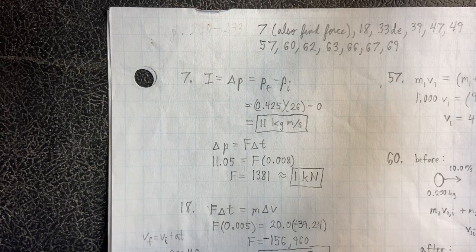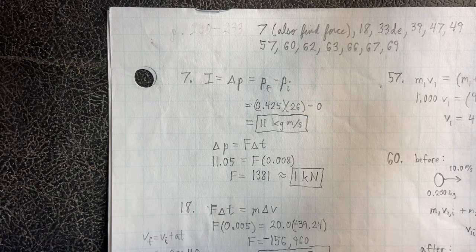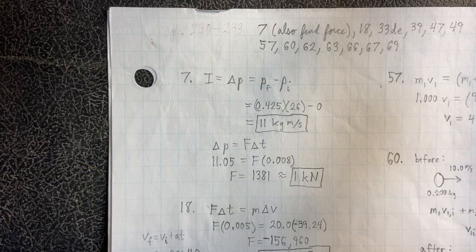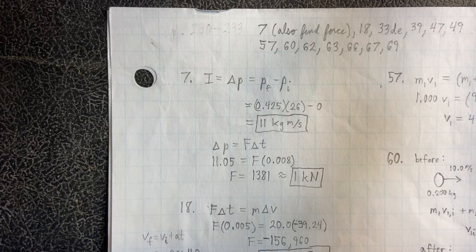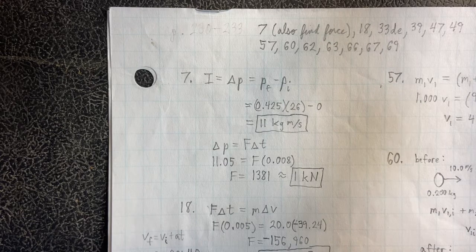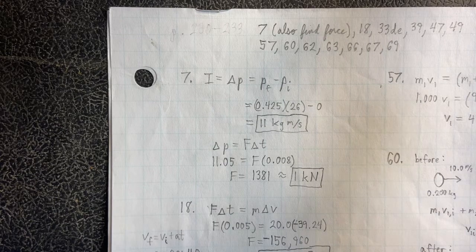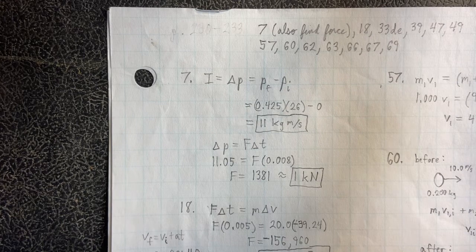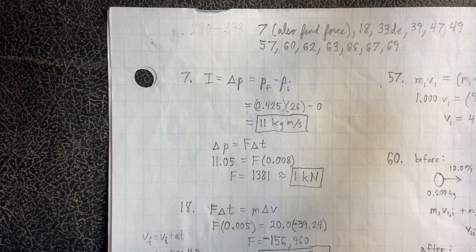Then we plug and chug and get 11 kilograms meters per second. Delta P equals F delta T, so change in momentum is impulse, which is M delta V and equivalently F delta T. We use F delta T here because we can just plug in what we know and get the force, which is one kilonewton.